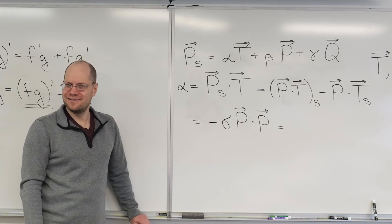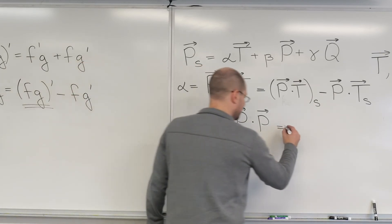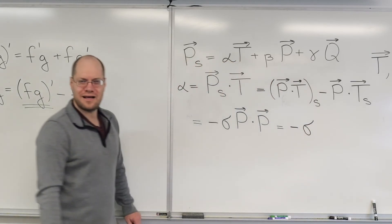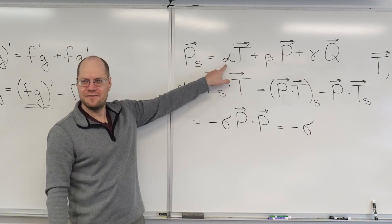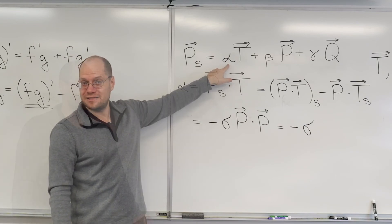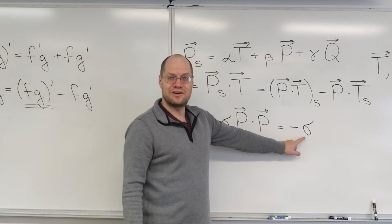And what is P dot P? One. Because P is unit length. That's right. So minus sigma. So we've determined that alpha equals minus sigma. Isn't that nice? Okay. So we've determined one coefficient.